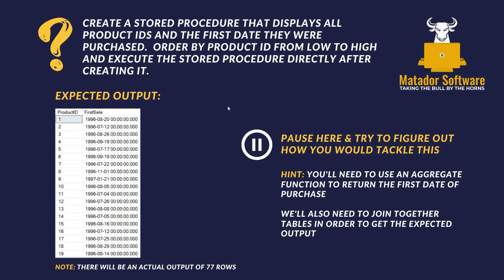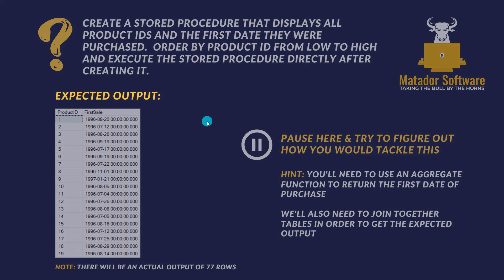Our first question: create a stored procedure that displays all product IDs and the first date they were purchased. As you can see on the left-hand side, we need to order by product ID from low to high, we need that first sale as the other column, and we need to execute a stored procedure. Key elements: stored procedure, display product IDs, first date of purchase, ordered low to high, and execute. We'll need an aggregate function to return the first date of purchase, and we'll need to join tables.